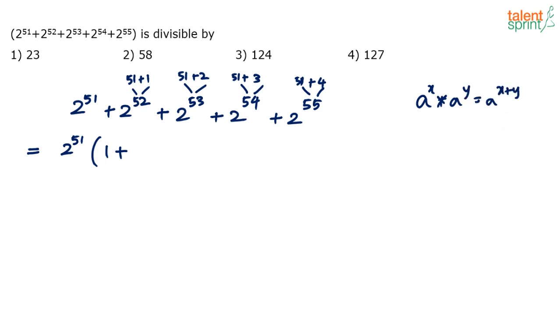So I am expressing the powers here as x plus y and then splitting it accordingly. So 2 to the power of 52 will become 2 to the power of 51 into 2 to the power of 1. 2 to the power of 53 will become 2 to the power of 51 into 2 to the power of 2, and so on. So 2 power 51 is common, so that way if you just proceed you get 1 plus 2 power 1.